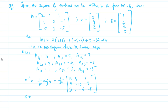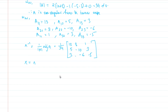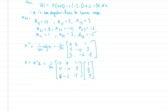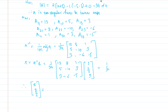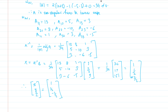Now X = A⁻¹B = (1/34) times [13, 1, 5; -10, 3, 3; -6, -5, (remaining entries)] times [1; 3/2; 9]. Solving this gives (1/34) times [34; 17; -51], which equals [1; 1/2; -3/2]. Therefore x = 1, y = 1/2, and z = -3/2.